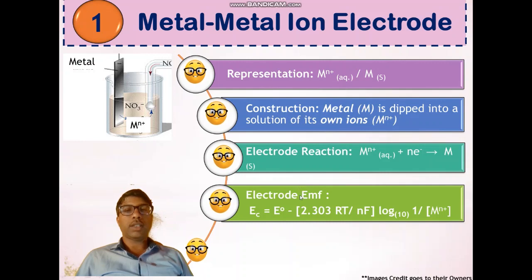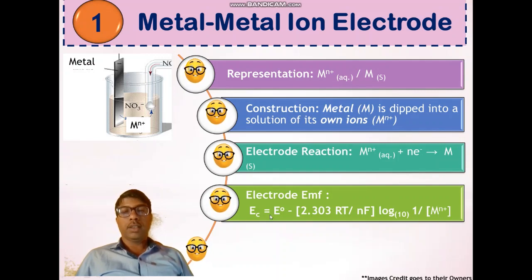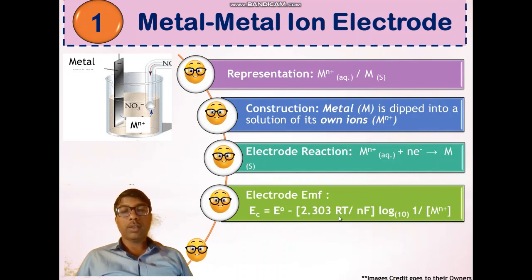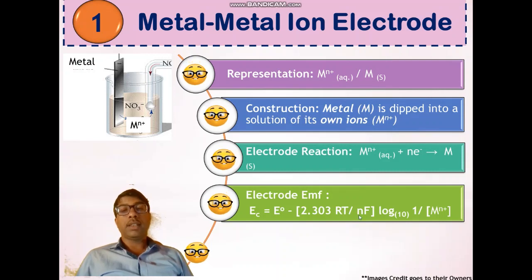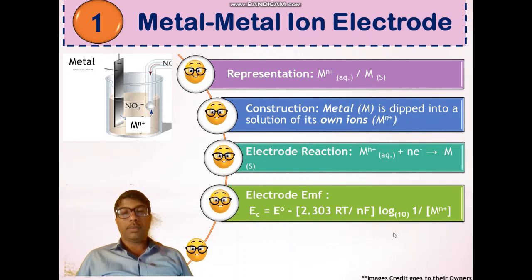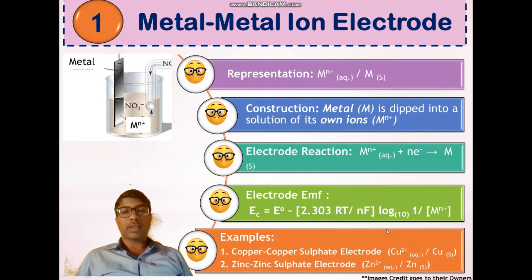The EMF of the metal-metal ion electrode is theoretically represented by the Nernst equation: Ec = E0 − (2.303RT / nF) × log(1 / [M^n+]). Here Ec is the EMF of the electrode, E0 is the standard EMF, R is the gas constant, T is the temperature in Kelvin, N is the number of electrons involved, and F is Faraday's constant. Other examples include copper-copper sulfate electrode and zinc-zinc sulfate electrode.